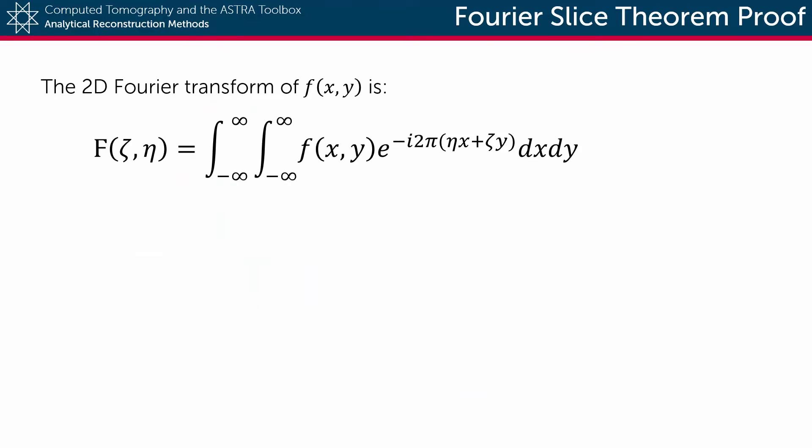Firstly, we write down the two-dimensional Fourier transform of the object function f. This is a double integral over x and y of the function itself multiplied by e to the power of minus i 2 pi times zeta x plus eta y, with eta and zeta the frequency components of the Fourier domain. Again, this is just from the definition of the two-dimensional Fourier transform.